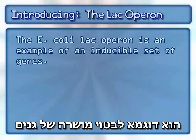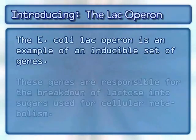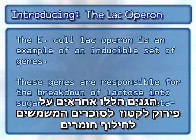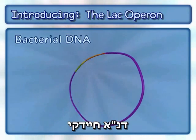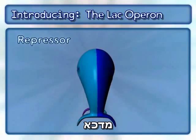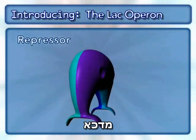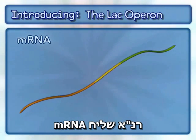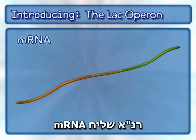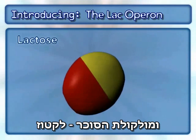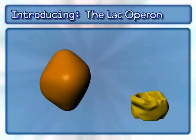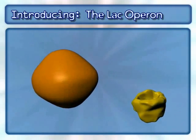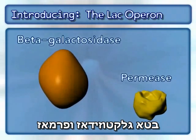The E. coli lac operon is an example of an inducible set of genes. These genes are responsible for the breakdown of lactose into sugars used for cellular metabolism. This inducible system also involves bacterial DNA, a repressor, mRNA, and the sugar molecule lactose. This animation will only focus on two of the three proteins encoded by the lac operon: beta-galactosidase and permease.